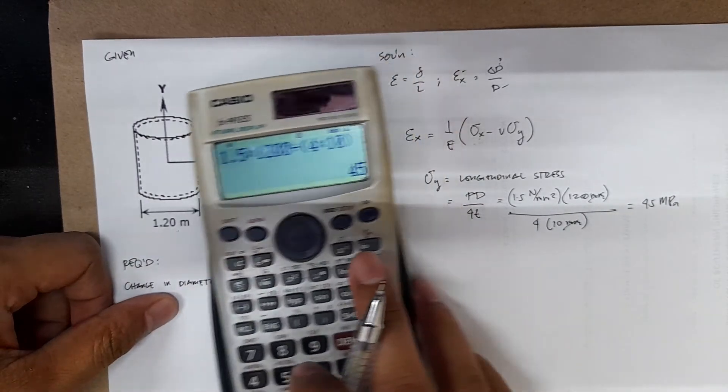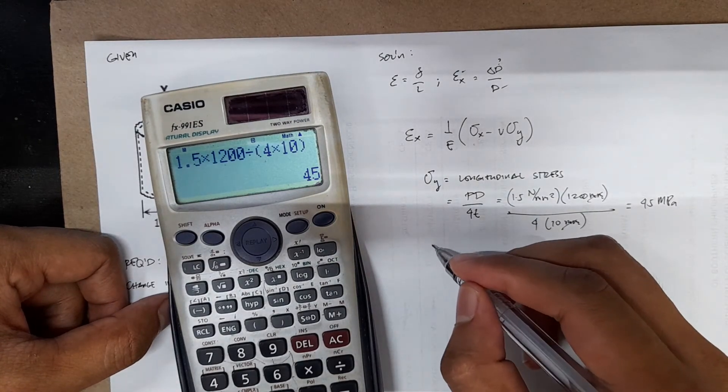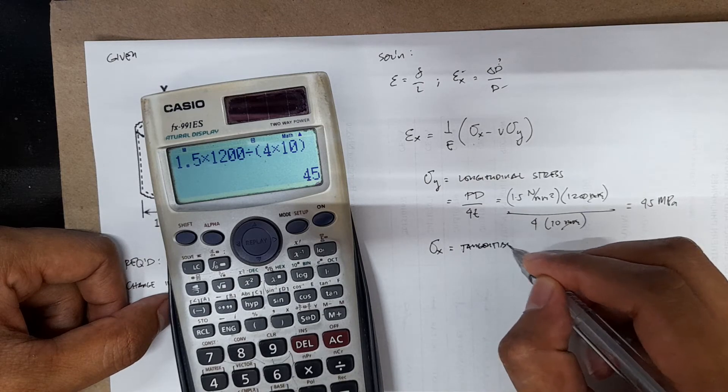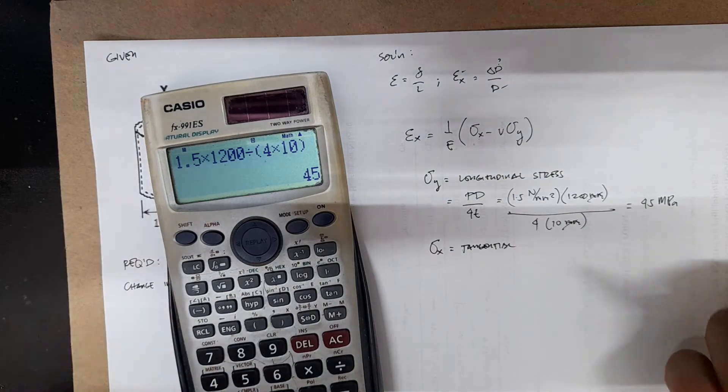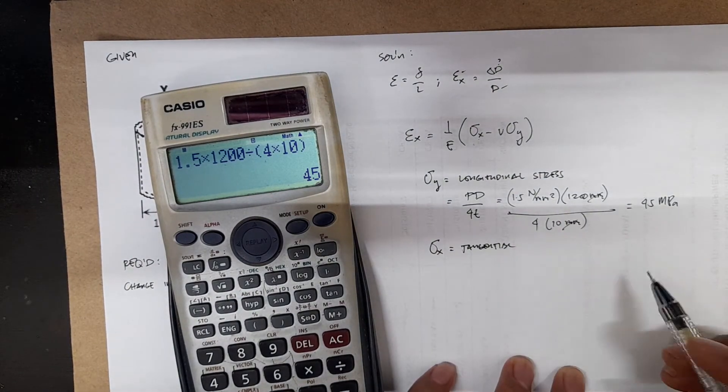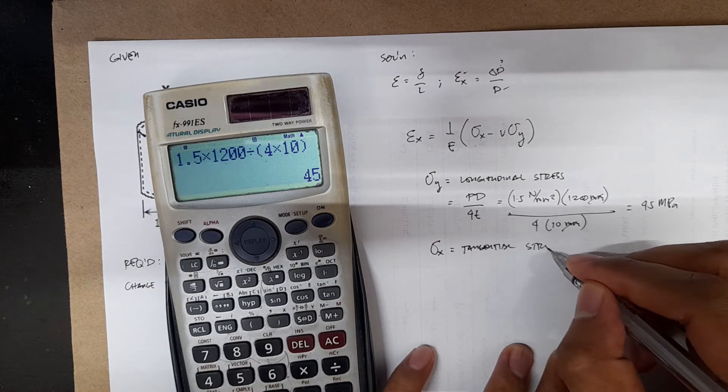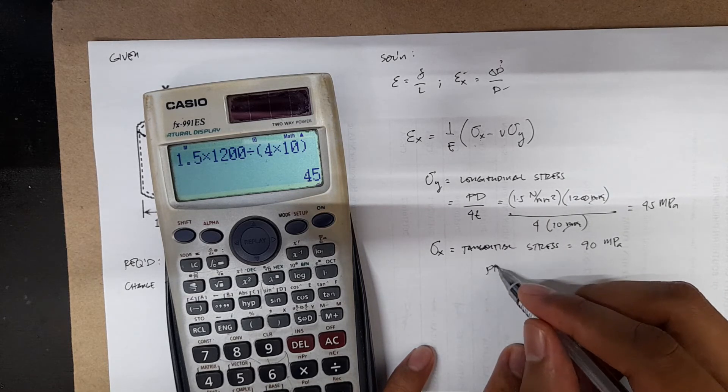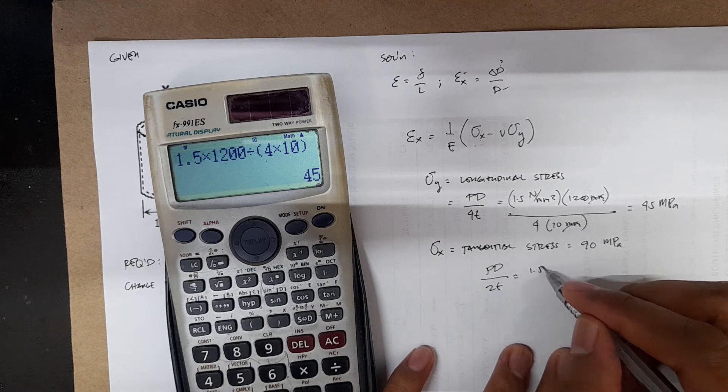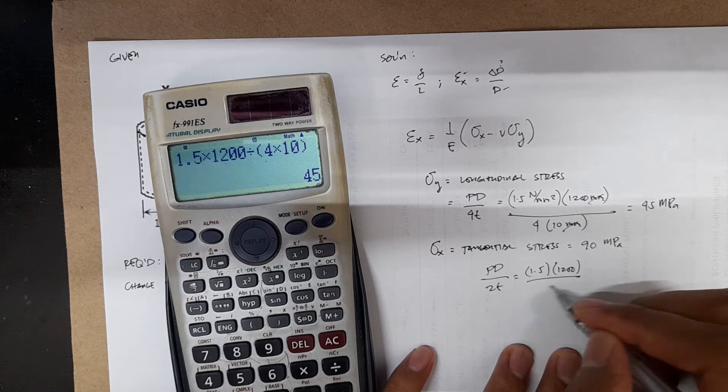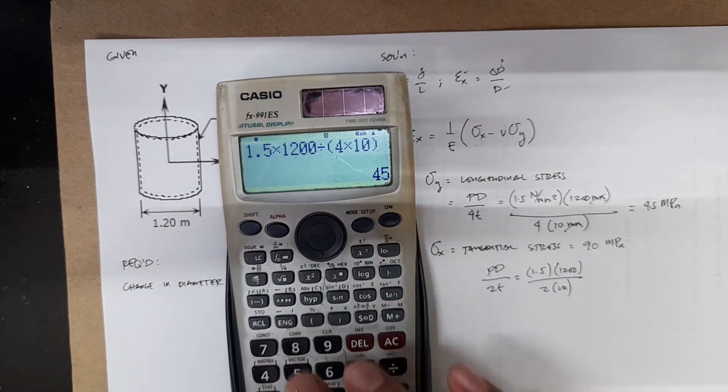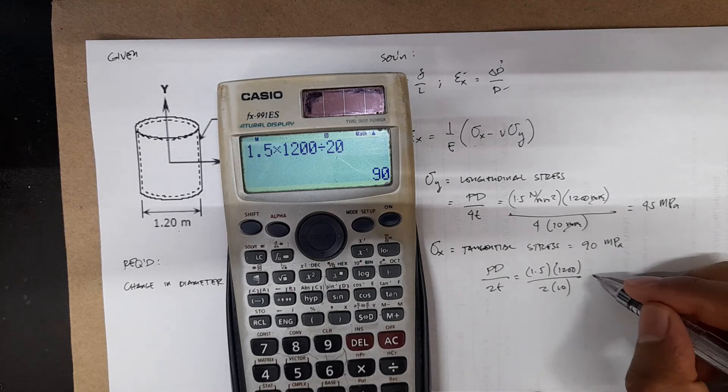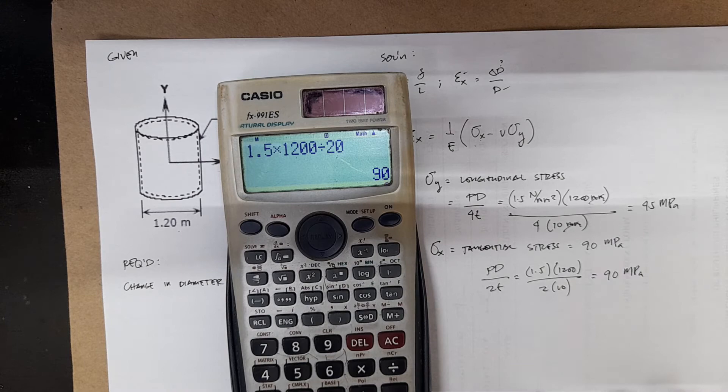Millimeters cancel, we have megapascals. Your stress x, which is your tangential. We know that tangential is just twice your longitudinal stress, so you have 90 megapascals. If you want to double check, that's just pd over 2t. So that's 1.5 times 1200 divided by 2 times 10. So let's just input this. You have 1.5 times 1200 divided by 20. That's 90. 90 megapascals.